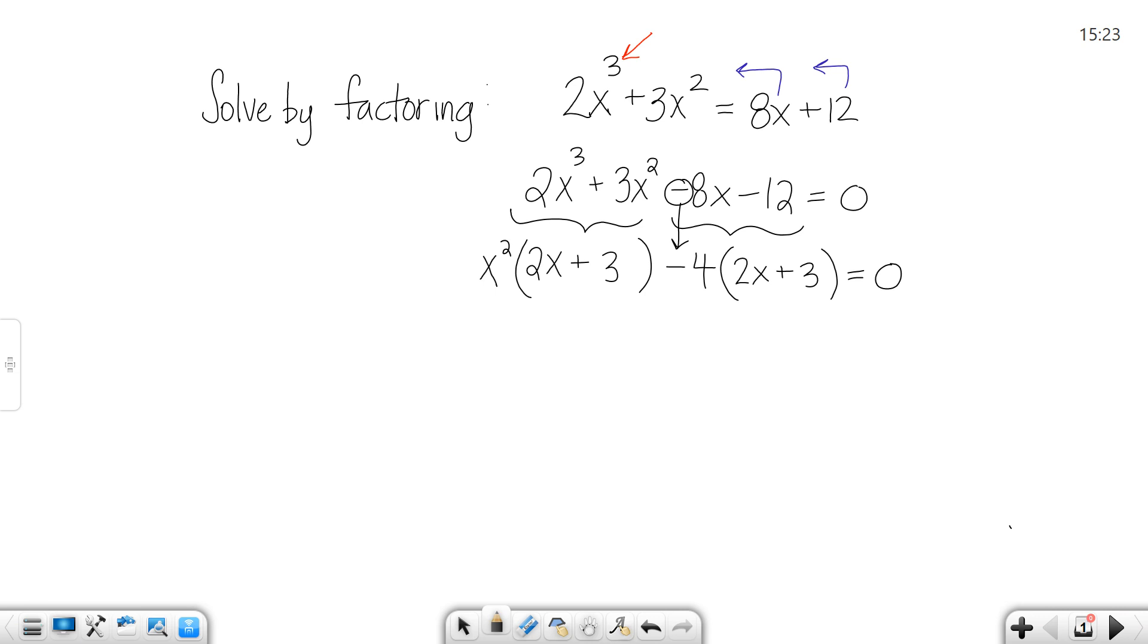Now that I have the GCF part done, I'm going to bring down the 2x plus 3, because that's what they have in common. If I take a 2x plus 3 out of this first part and out of the second part, what's left behind is an x squared minus 4.